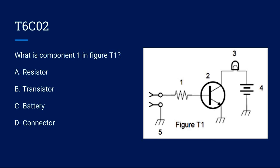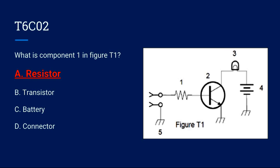T6C02: What is component 1 in figure T1? A, resistor. B, transistor. C, battery. Or D, connector? Component 1 is right here — the correct answer is A, a resistor.